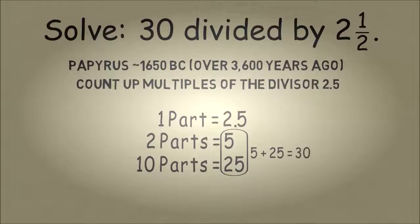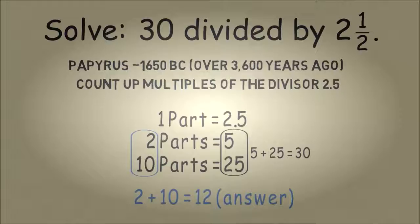We can add up 5 and 25 to get 30. So we're adding up to 30, which is because we're doing 30 divided by 2 and a half. And now to get our answer, our quotient, we just add up the parts. So we add up 2 parts and 10 parts, and we get 12. And that's our answer, 30 divided by 2 and a half is 12.